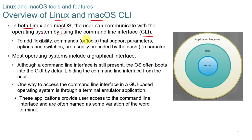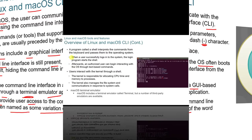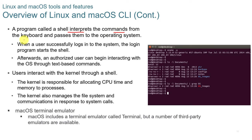In both Linux and Mac, the user can communicate with the operating system using the CLI (command line interface). Commands that support parameters, options, and switches are usually preceded by the dash character. One way to access the CLI in a GUI-based operating system is through a terminal or terminal emulator application. A program called a shell interprets commands from the keyboard and passes them to the operating system. When a user logs in, the login program starts the shell, and the user can then interact with the OS through text-based commands. Users interact with the kernel through the shell; the kernel is responsible for allocating CPU time and memory to processes, managing the file system, and responding to system calls.